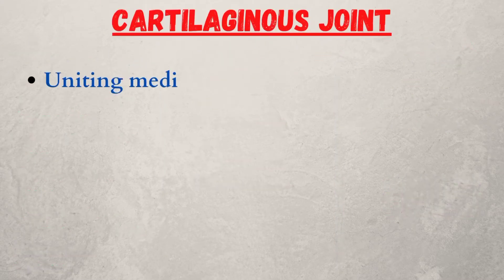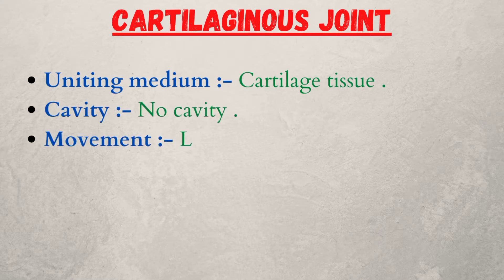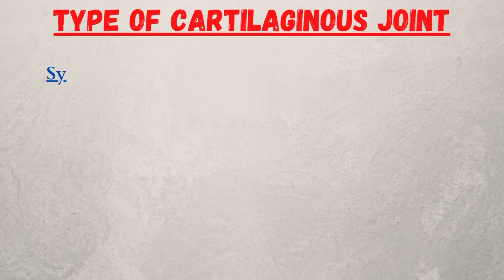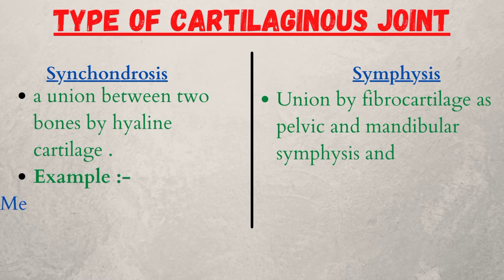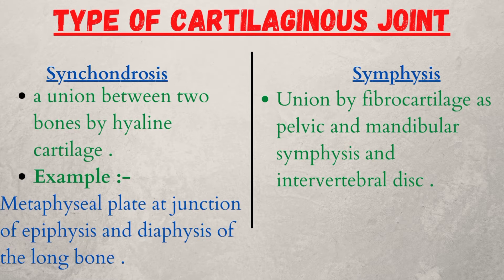The second type is the cartilaginous joint. The uniting medium is cartilage tissue; there is no cavity and it allows little movement or is immobile. The status is to ossify before adult life. Types are: synchondrosis, a union between two bones by hyaline cartilage — example: the metaphyseal plate at the junction of epiphysis and diaphysis of a long bone — and symphysis, a union by fibrocartilage, as in the pelvic and mandibular symphysis and the intervertebral disc.